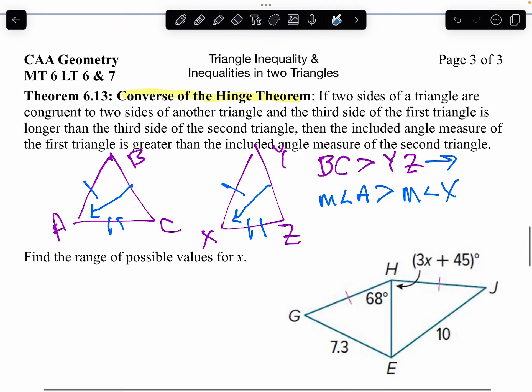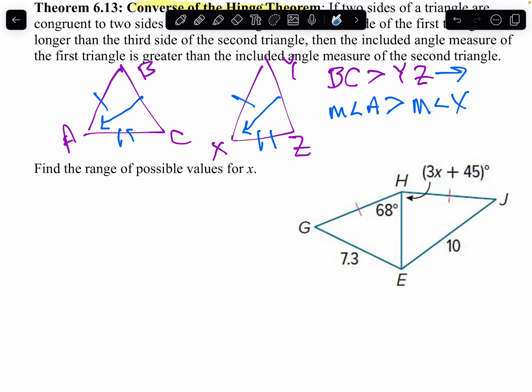Now, if we take a look at this last problem, notice in order to use the hinge theorem, you must have two sides the same. Well, I definitely see HG and HJ are the same. And notice, HE is in both triangles, so it's congruent to itself by the reflexive property.